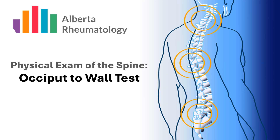The occiput-to-wall test is used to determine if a patient has a significant amount of forward curvature or kyphosis in the thoracic spine, which may be seen in spondyloarthropathies or other spinal degenerative processes.